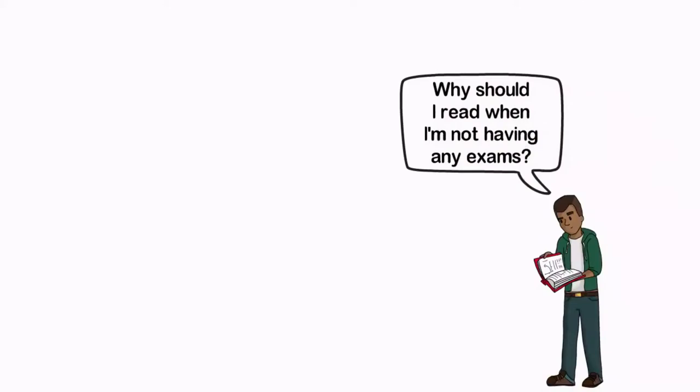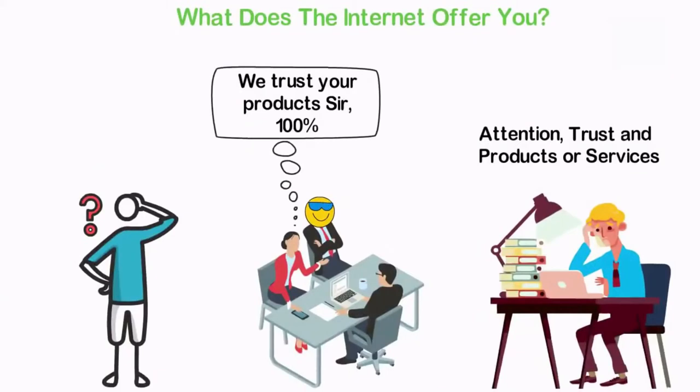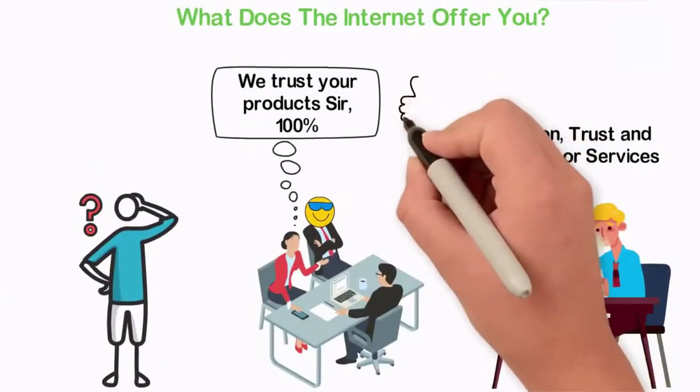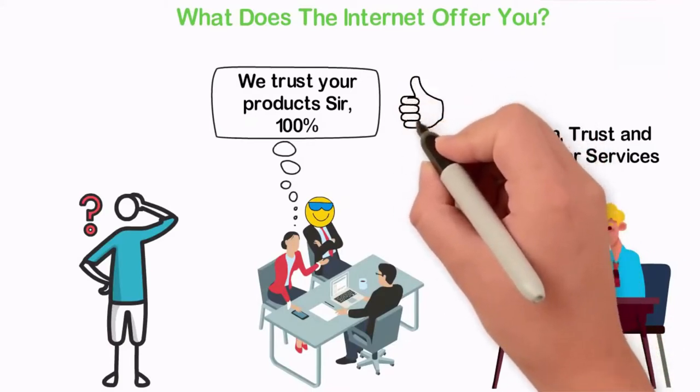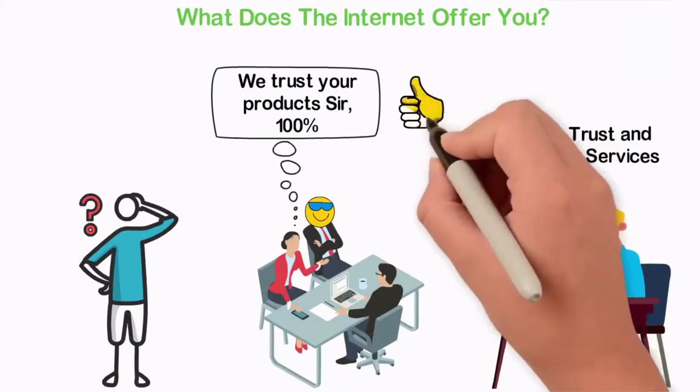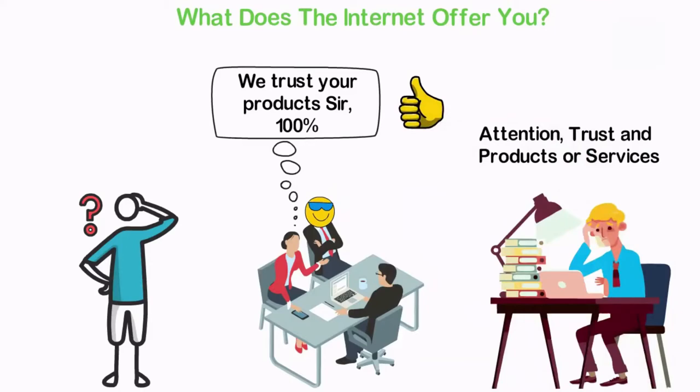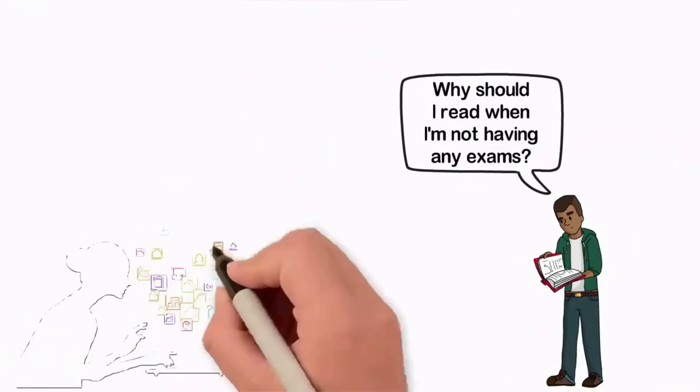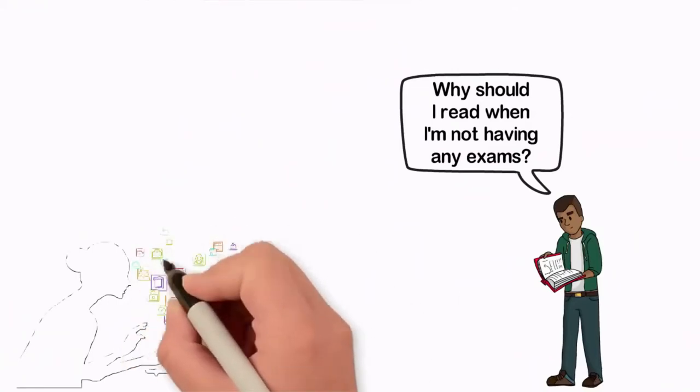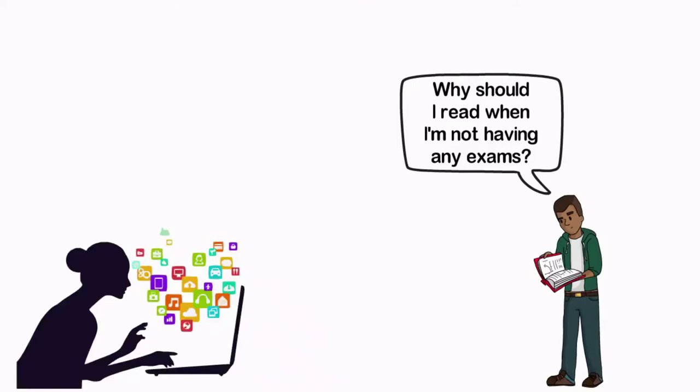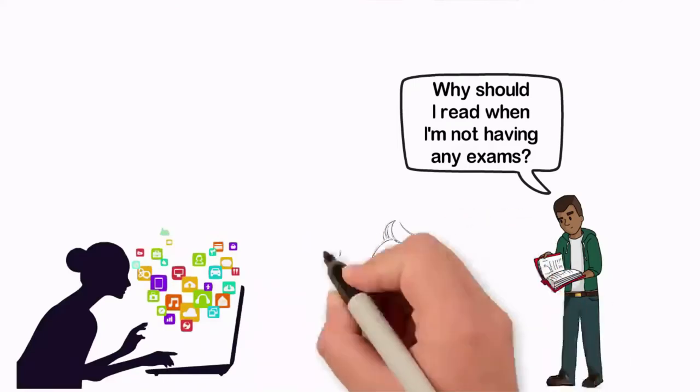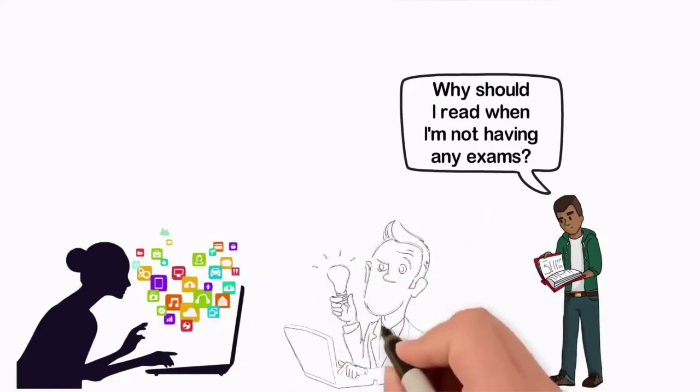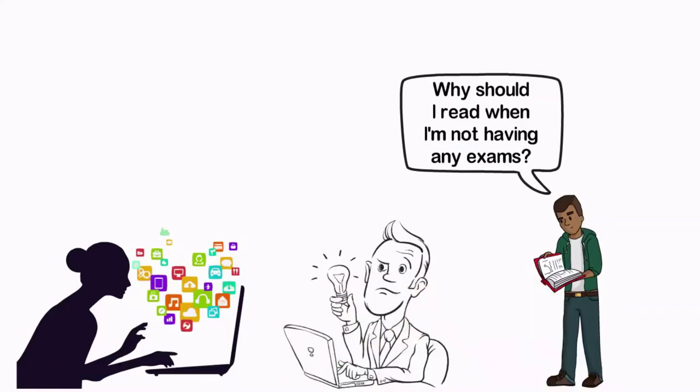Again, the three most important assets to make a lot of money are attention, trust and the product. In that order, you need people to know you exist - attention, you need some of these people to trust you and you need to know how to sell to them valuable products or services. Nothing in the history of the human race makes it easier to get all these assets than the internet. I also analyzed in this video that most people visit the internet to consume content. Because most people visit the internet to consume content, the best way to get their attention is by creating content. I seriously hope that this video helps you.